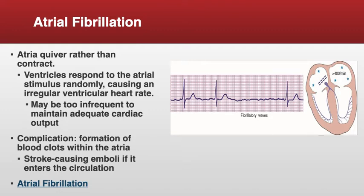Atrial fibrillation can form clots within the atria that can lead to stroke. Emboli can enter the circulation, and once that happens, a clot formed in the atria can break loose, travel to the brain, and cause a stroke. That's why atrial fibrillation must be treated as soon as possible, and why many people take anticoagulant drugs. When you look at it, you do not see one P wave for every QRS — instead you see many little bumpy waves, and the R to R is not regular.